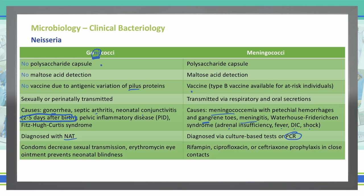We are able to reduce the spread of gonococci using certain types of prevention. For sexual transmission, condoms are effective. For transmission from a mother to a newborn, the erythromycin eye drops given immediately after birth help prevent neonatal blindness associated with gonococcal infections and neonatal conjunctivitis.